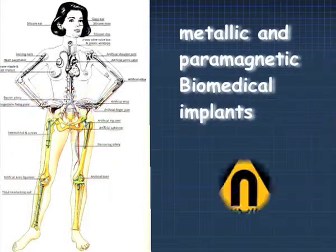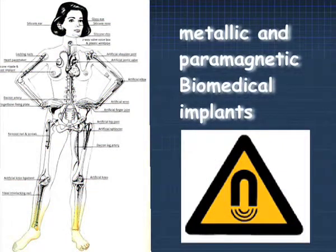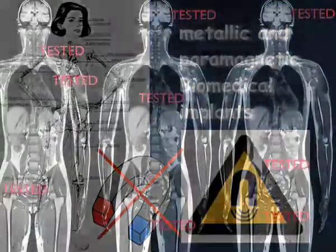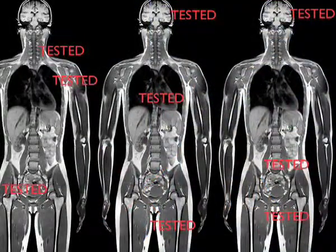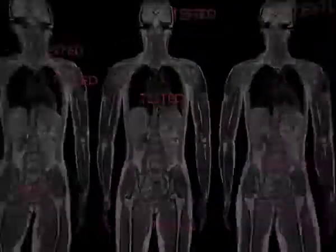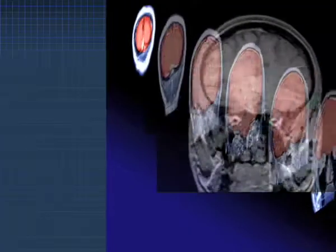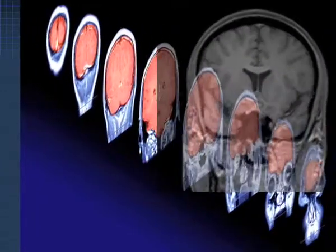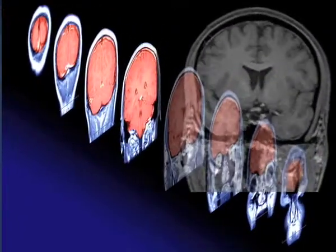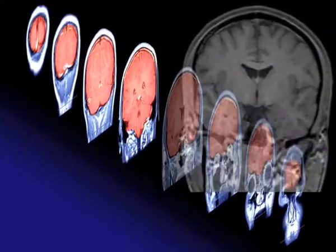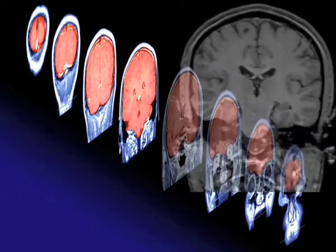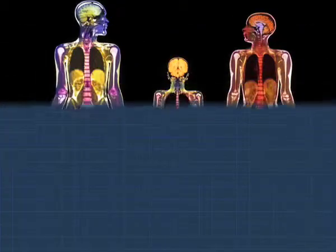Patients with magnetic implants cannot easily be scanned due to the presence of a high magnetic field. The variation in magnetic field permits localization of the image slices as well as phase encoding and frequency encoding.